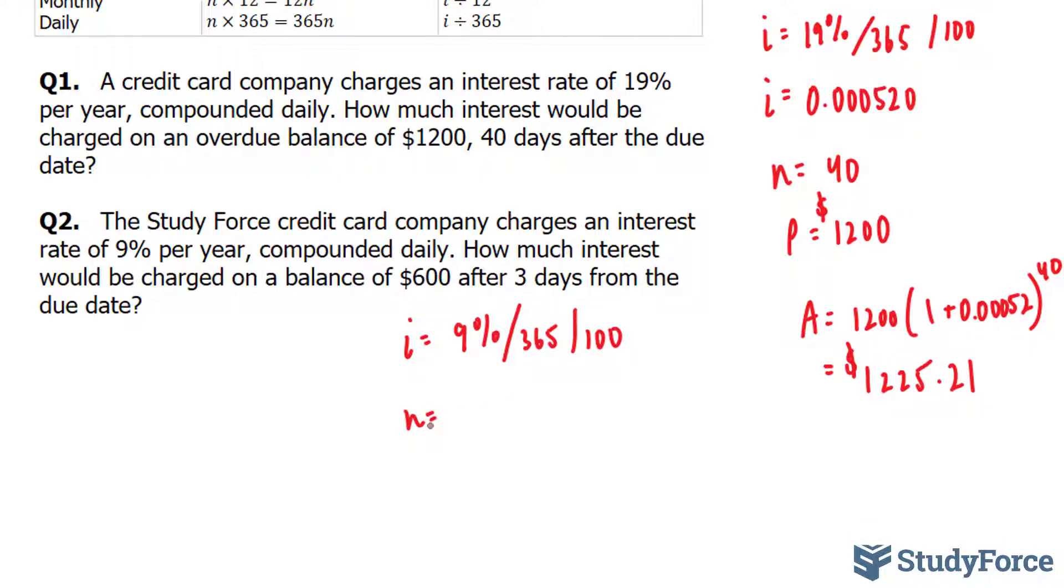How much interest would be charged on a balance of $600, that's our P value, after 3 days from the due date? So we have n is equal to 3.